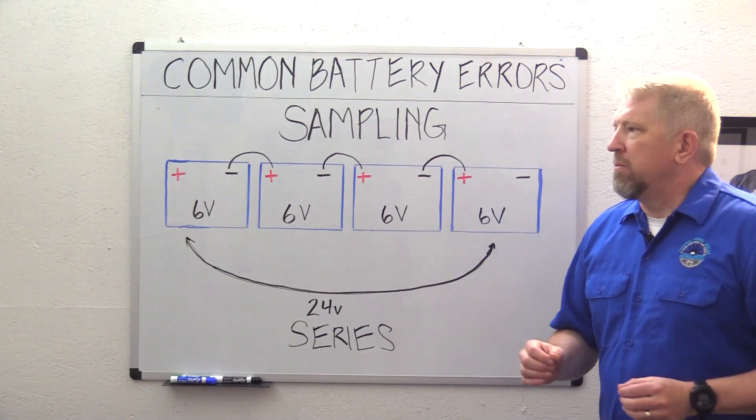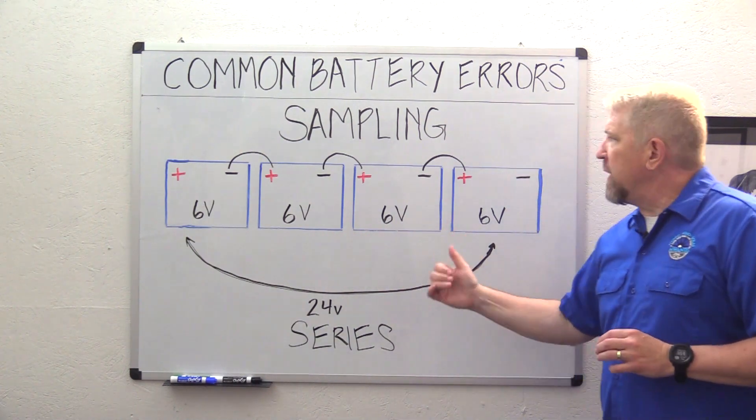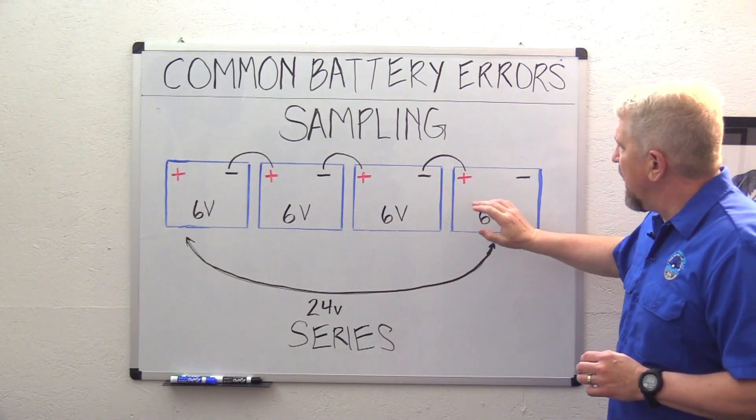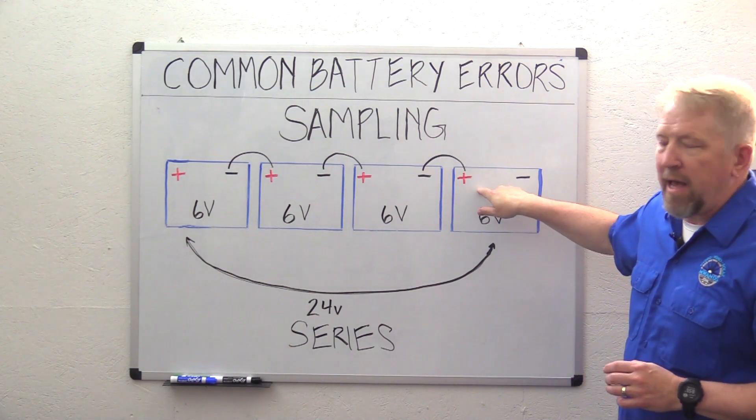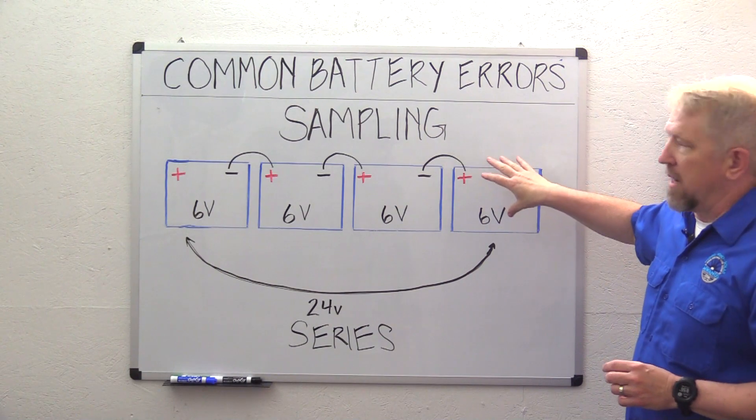So what sampling would be about here is if we took our inverter and we attached it to the positive and negative on just this first battery, this would be one problem with sampling.